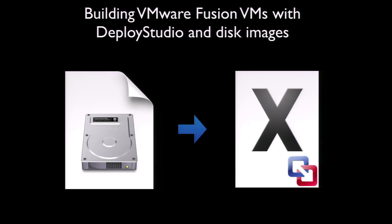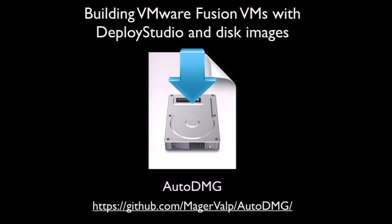If you don't want to use Create OS X Install PKG, you should be able to install a disk image into a VM just like you can on a Mac. For building disk images, I recommend using Per Olofsson's AutoDMG tool. I'd also like to note that AutoDMG is how Per himself has indicated he wants it pronounced. I myself have nothing but warmth and affection for this tool.